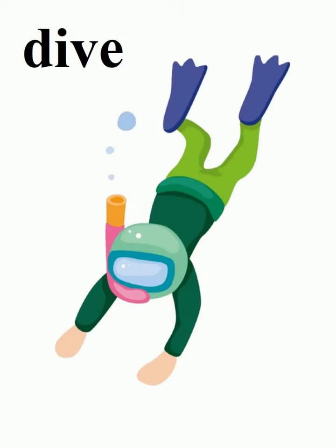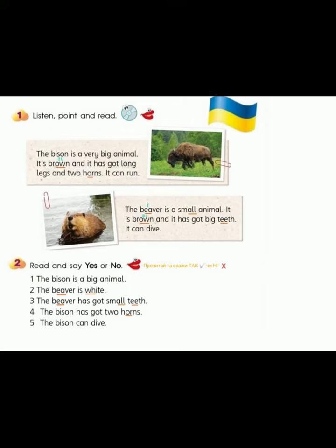One. Listen, point and read. The bison is a very big animal. It's brown and it has got long legs and two horns. It can run. The beaver is a small animal. It is brown and it has got big teeth. It can dive.